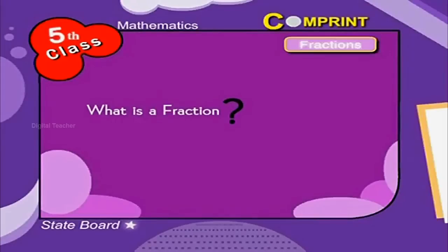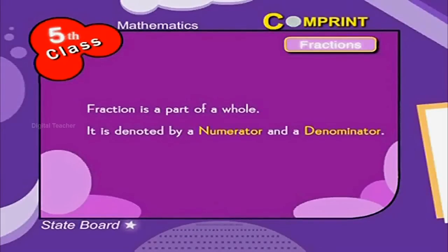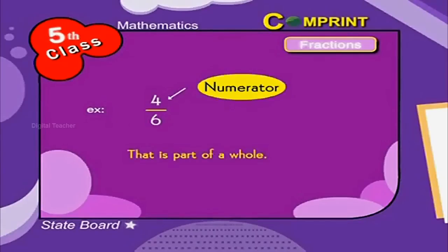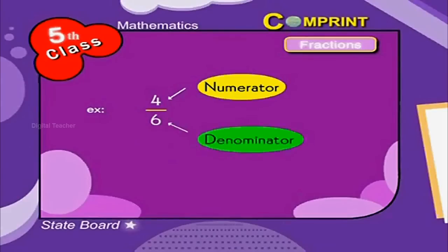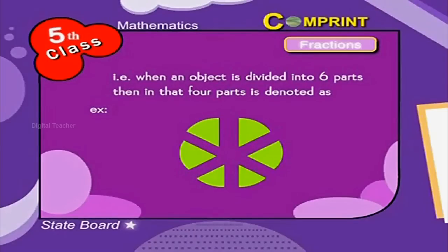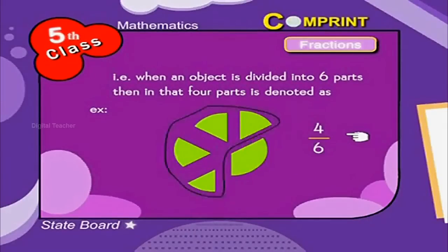Fractions. What is a fraction? A fraction is a part of a whole. It is denoted by a numerator and a denominator. For example, 4 by 6 — 4 is the numerator, that is the part of a whole; 6 is the denominator, it denotes the whole. When an object is divided into 6 parts, 4 of those parts are denoted as 4 by 6.